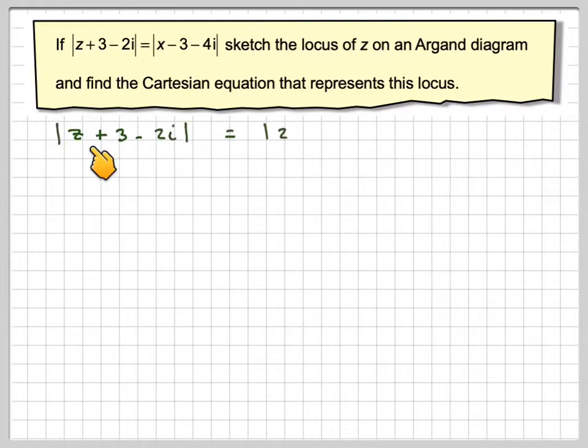Okay, so we've got the absolute value of z plus 3 minus 2i equals the absolute value of z minus 3 minus 4i. If we let z equal x plus iy, the general form of a complex number, we've got the modulus of x plus iy plus 3 minus 2i is equal to the modulus of x plus iy minus 3 minus 4i.